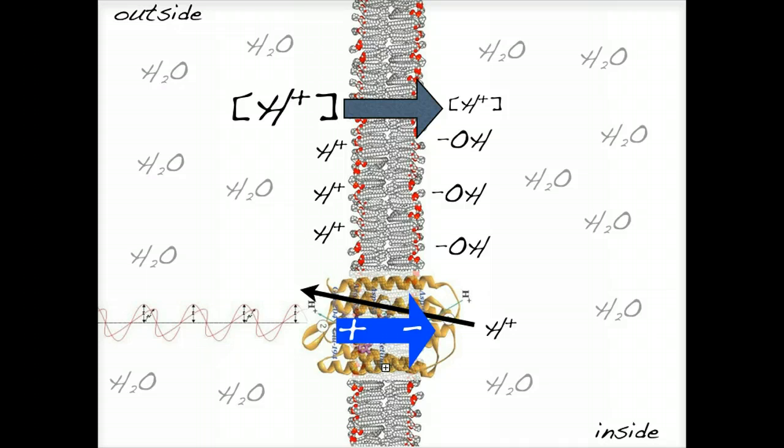Both the hydrogen ion gradient and the electric field begin to oppose the movement of hydrogens across the membrane, even in the presence of light.